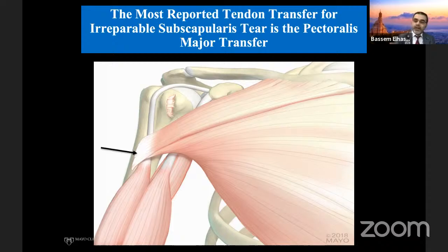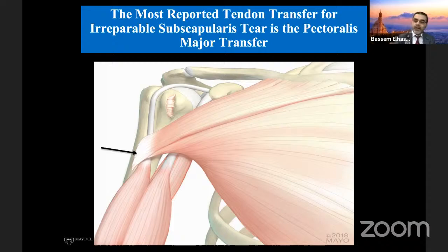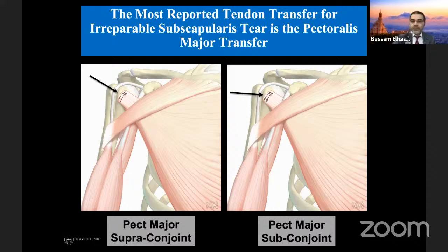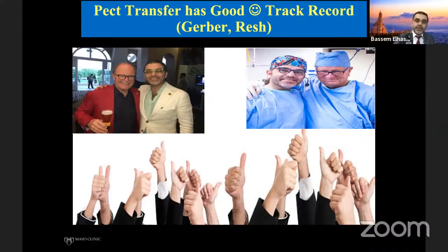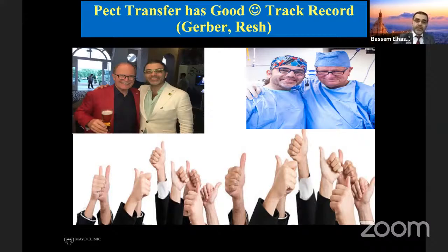The other technique is pectoralis minor, which looks closer to the subscap. Credit goes to great surgeons Christian Gerber and Herbert Resch, who have done this for a long time with very good outcomes including 10-15 year follow-up. The pec transfer does work. However, I haven't done a single pec transfer for irreparable subscap, and I'll tell you why. Looking at anatomic dissection from the side of the body: the pectoralis is anterior, the scapula is posterior. The subscap is anterior relative to the scapula, but not anterior relative to the chest.